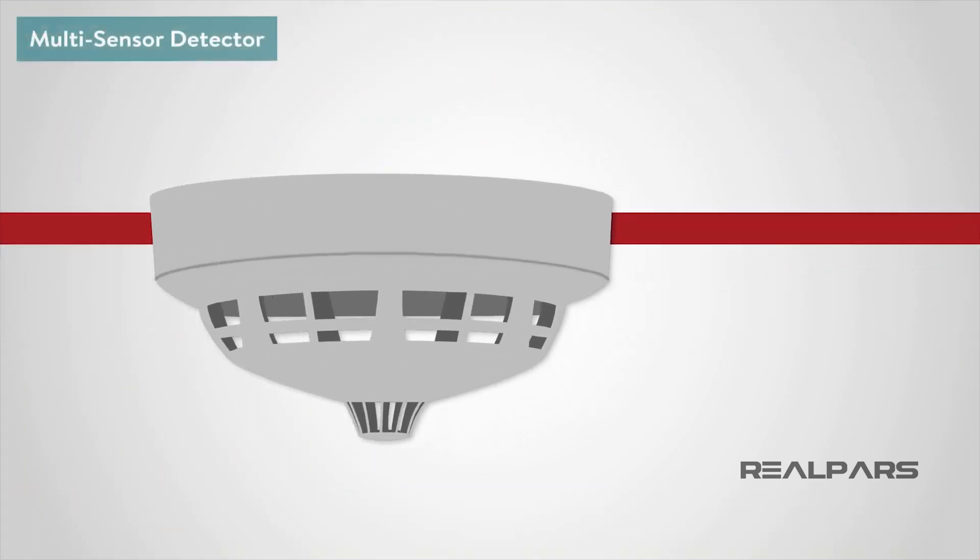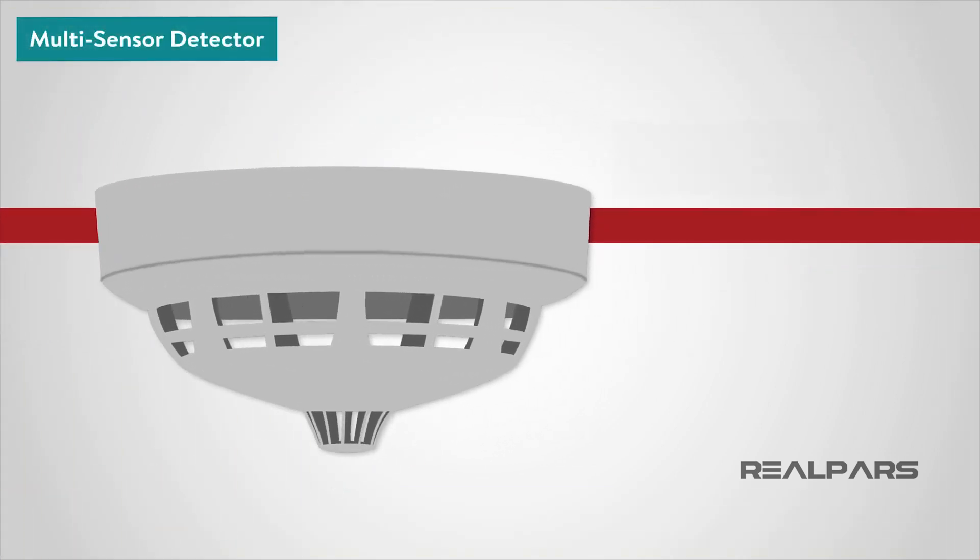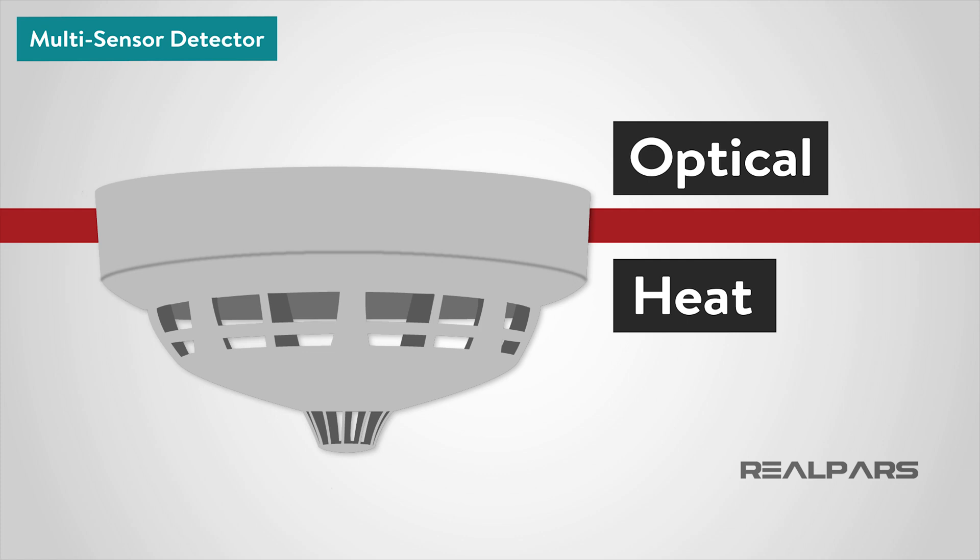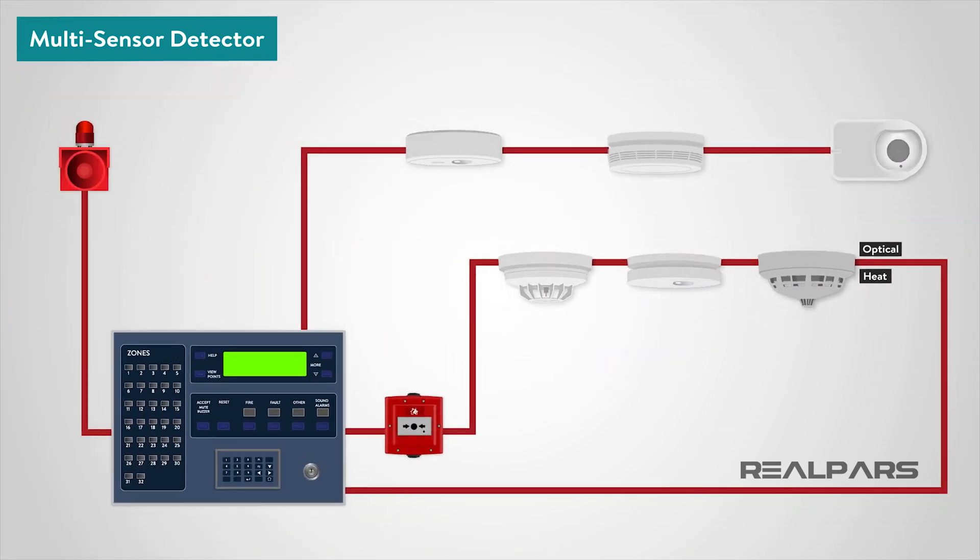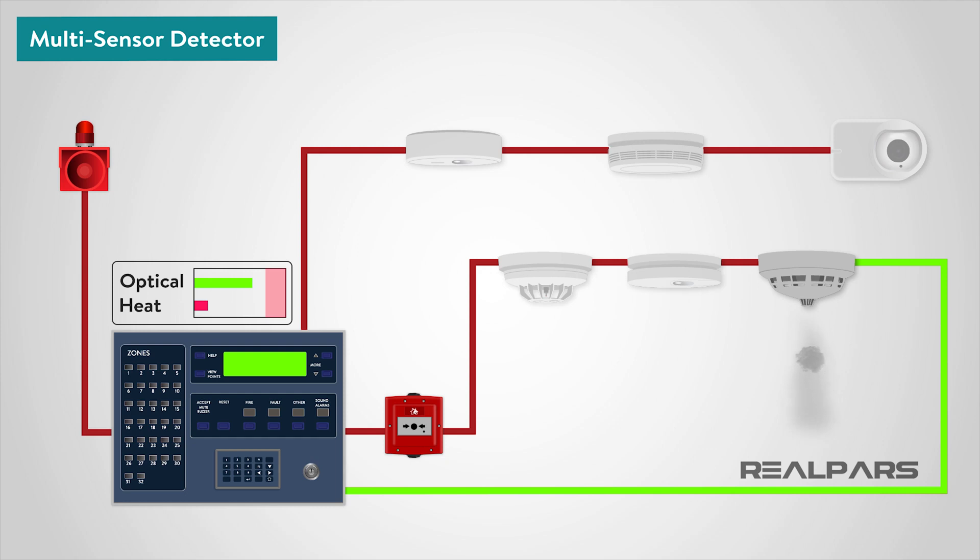The multi-sensor detectors combine inputs from both optical and heat sensors and process them using a sophisticated algorithm built into the detector circuitry. When pulled by the control panel, the detector returns a value based on the combined responses from both the optical and heat sensors. They are designed to be sensitive to a wide range of fires.